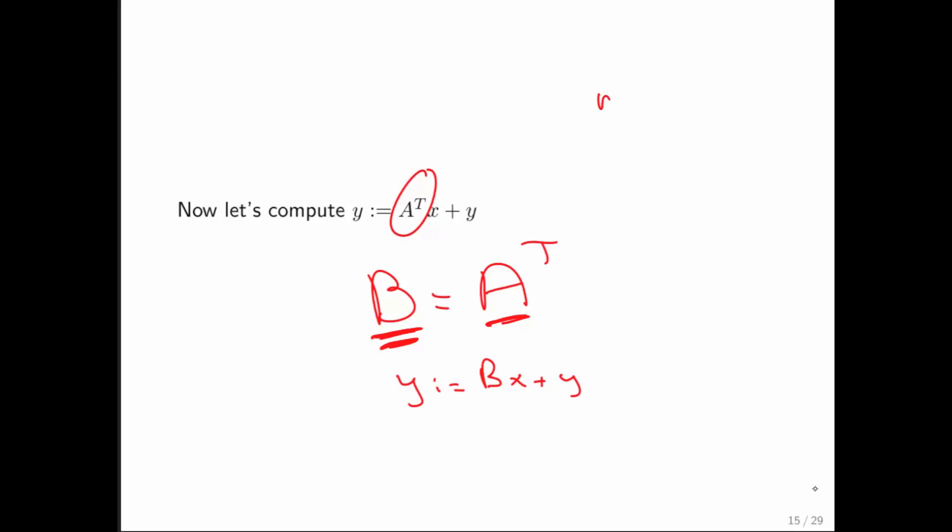So notice that there are m times n elements in each of A and B. So you would have to do m times n, what are called loads, memory operations. And then you would have to do m times n stores to store B to memory, which are also memory operations.